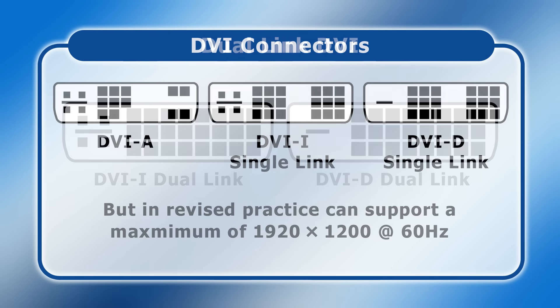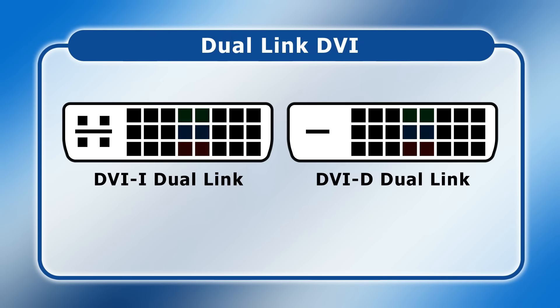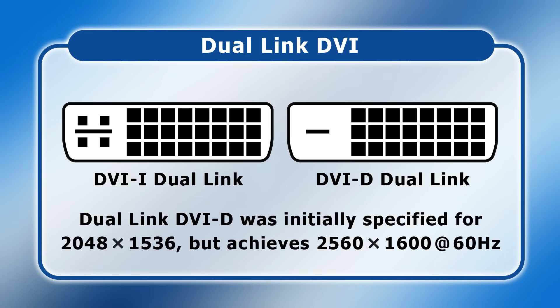Moving on, dual link DVI connectors add in six extra digital pins. These carry a second copy of the digital red, blue, and green signal components, so allowing a higher digital resolution. This was initially specified as 2048x1536, but in practice today is up to 2560x1600 at 60Hz. So dual link DVI allows a resolution higher than HD, but does not support a 4K display.